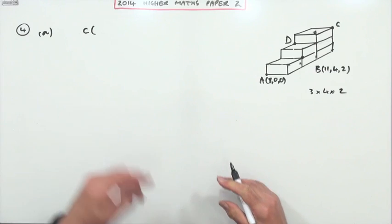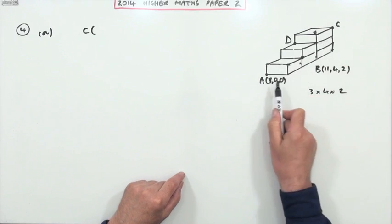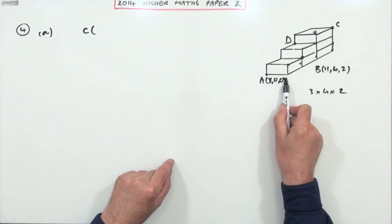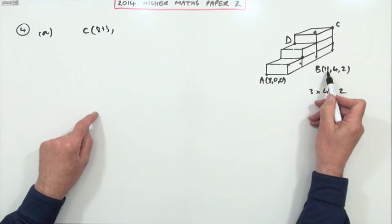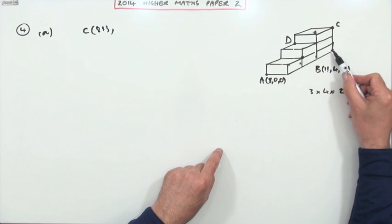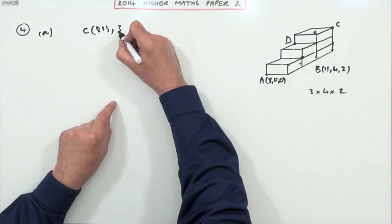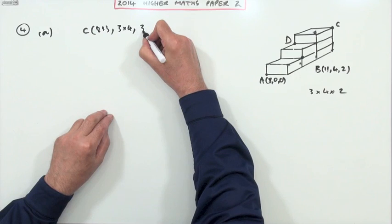So what are the coordinates of C? Well it just says state, so you could write it down, but I'll go through the stages of it. C is on the right hand face, so it'll be 8 plus a width, so it'll be 8 plus 3, or I could have said it's 11 because obviously it's the same face as B. It's 3 steps back, so it's 3 lots of 4 in the y direction, and it's 3 boxes up, so it's 3 times 2 in the z direction.